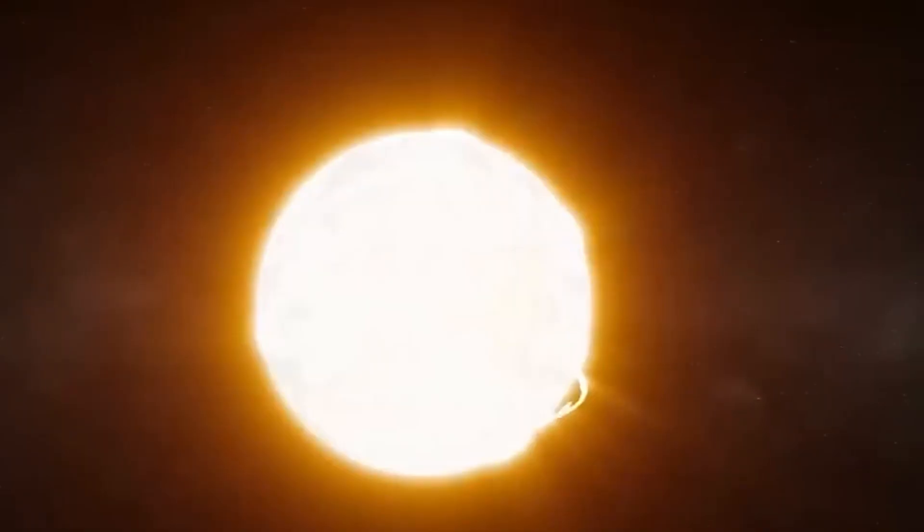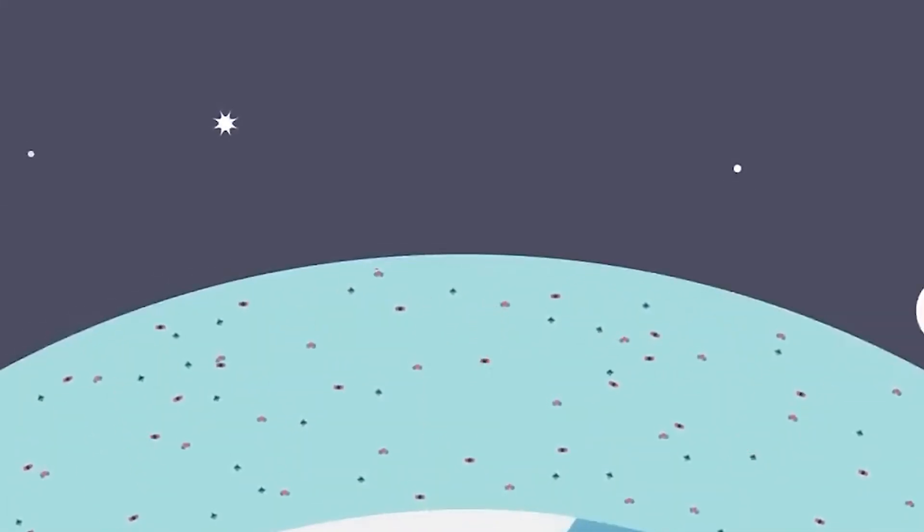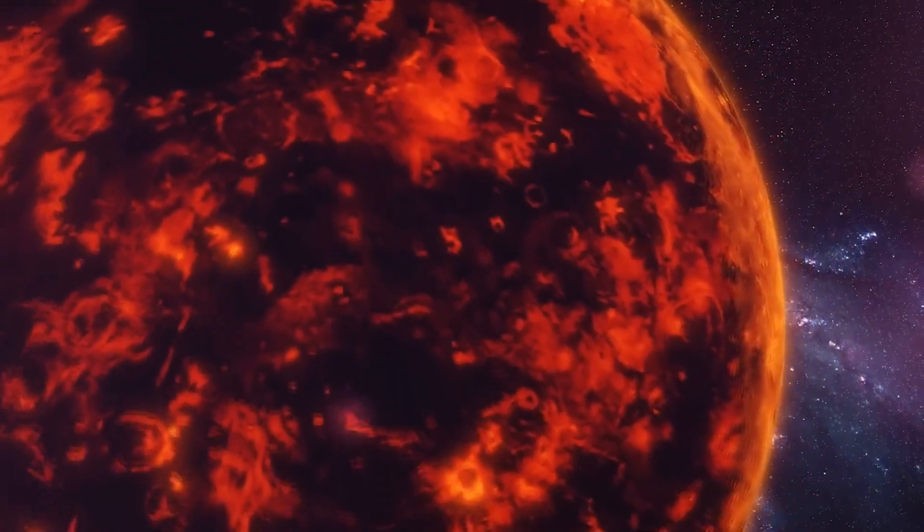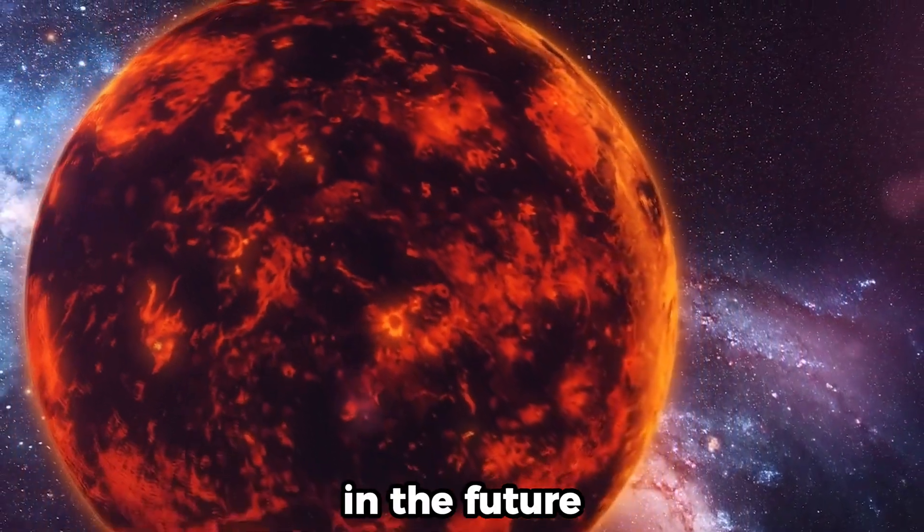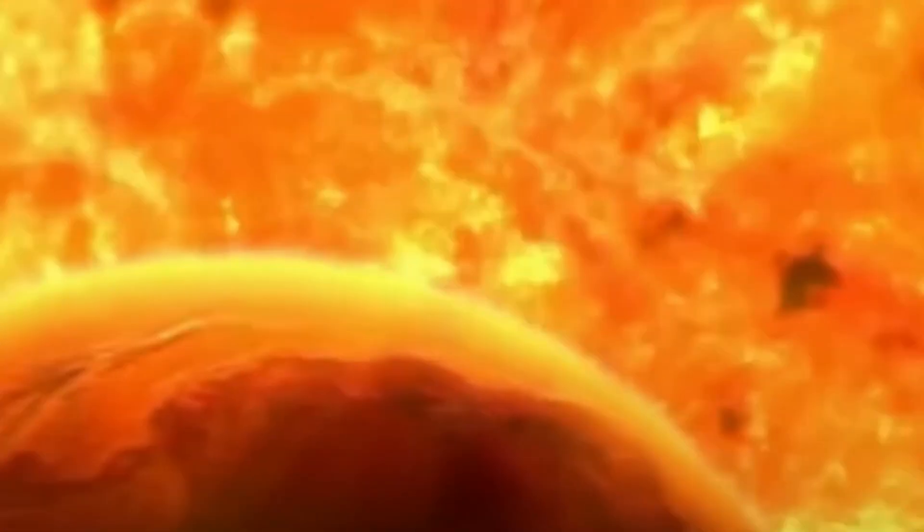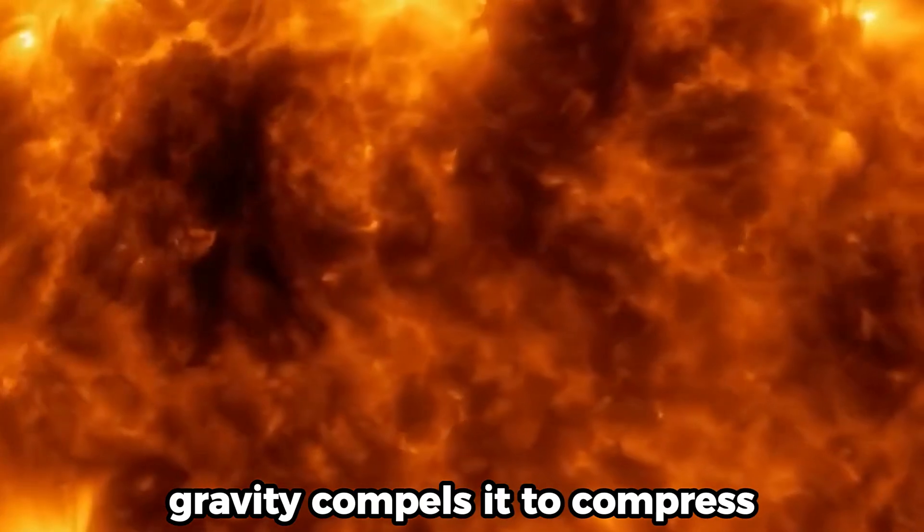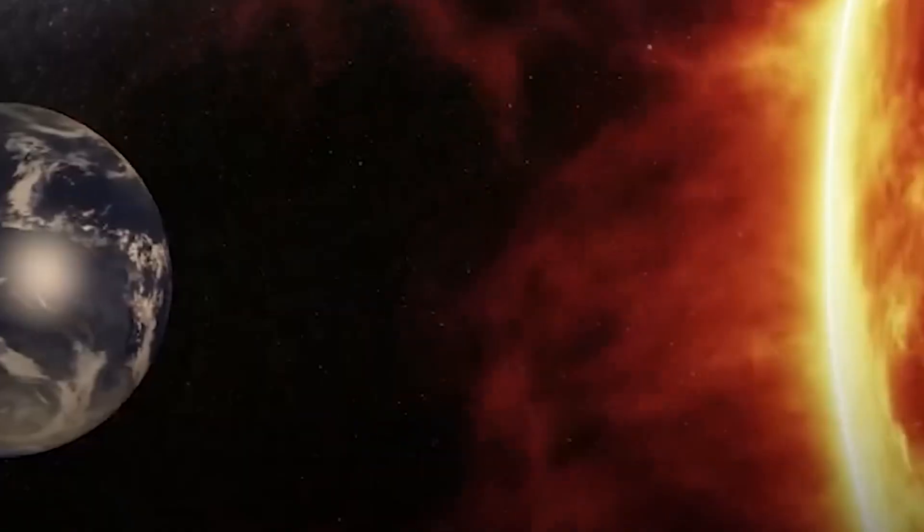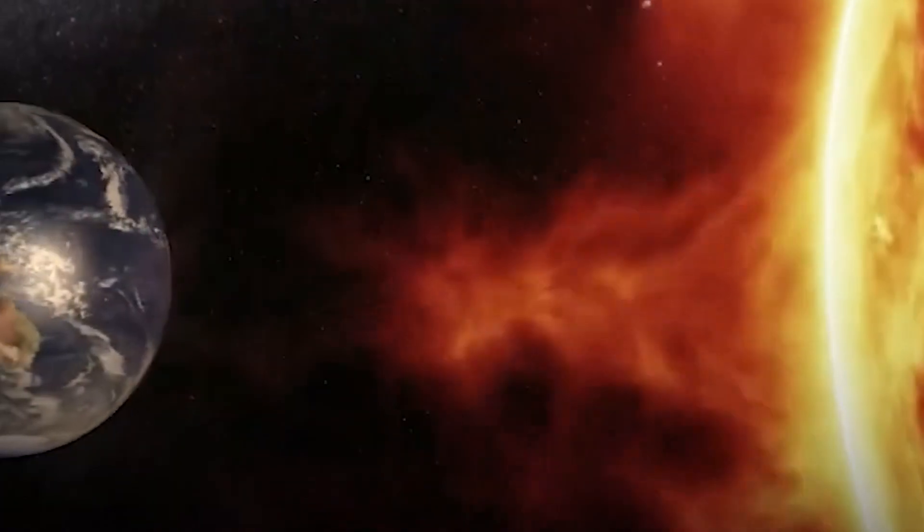However, as the Sun continues to age, it will eventually exhaust its hydrogen reserves, which will lead to a dramatic alteration at some point in the future. As soon as the core of the Sun is bereft of hydrogen, gravity compels it to compress, which in turn leads its outer layers to expand, ultimately resulting in the birth of a red giant star.